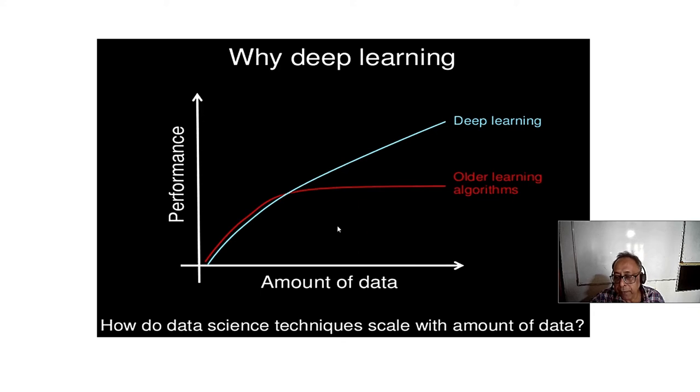If we have more amount of data, the performance of deep learning is much better. Now the computing is cheap and we already have various techniques, so that is the reason we have chosen deep learning because the resources are there, even labeled data are there.